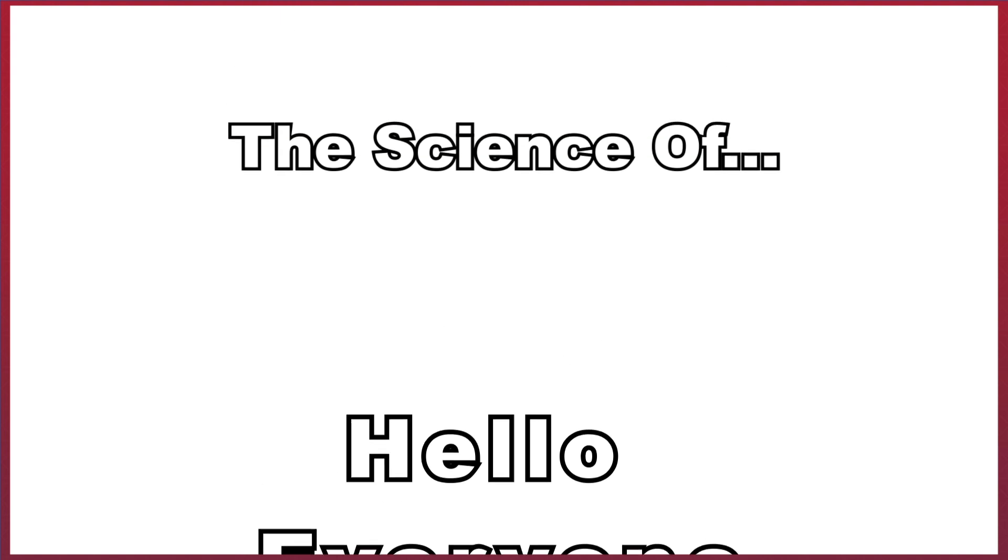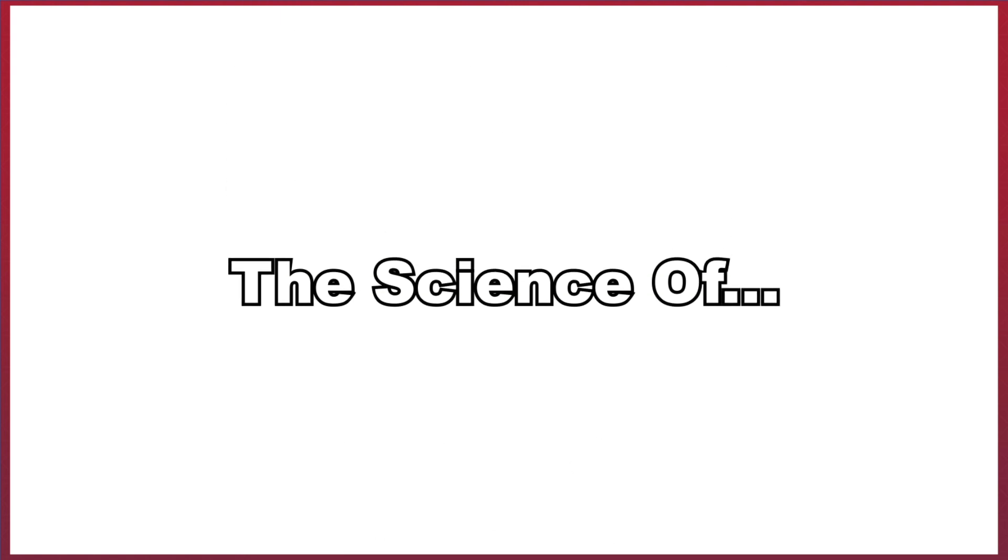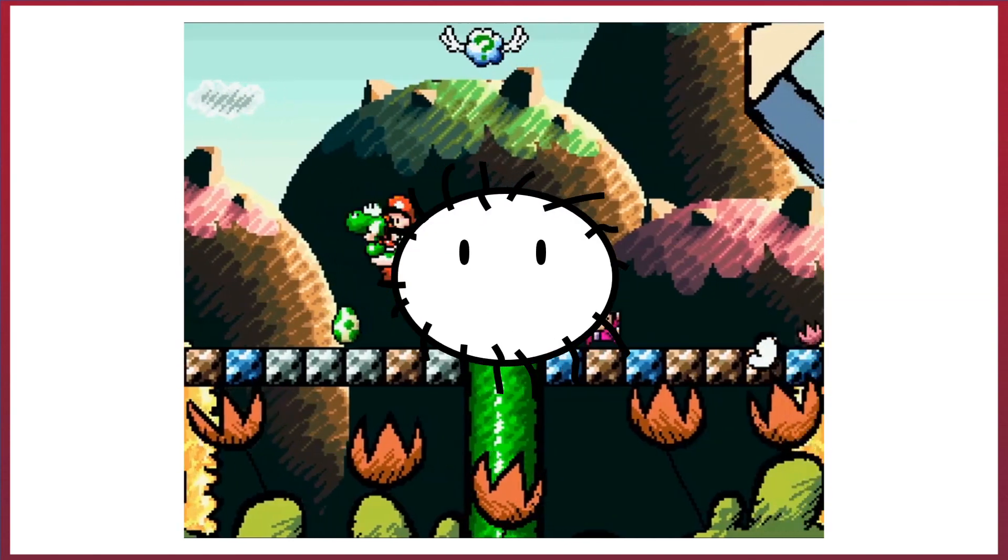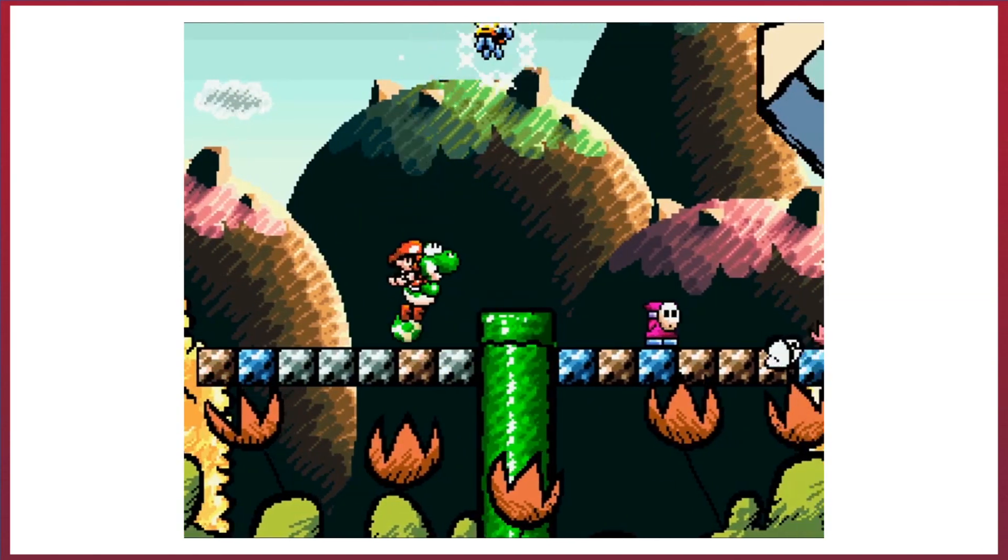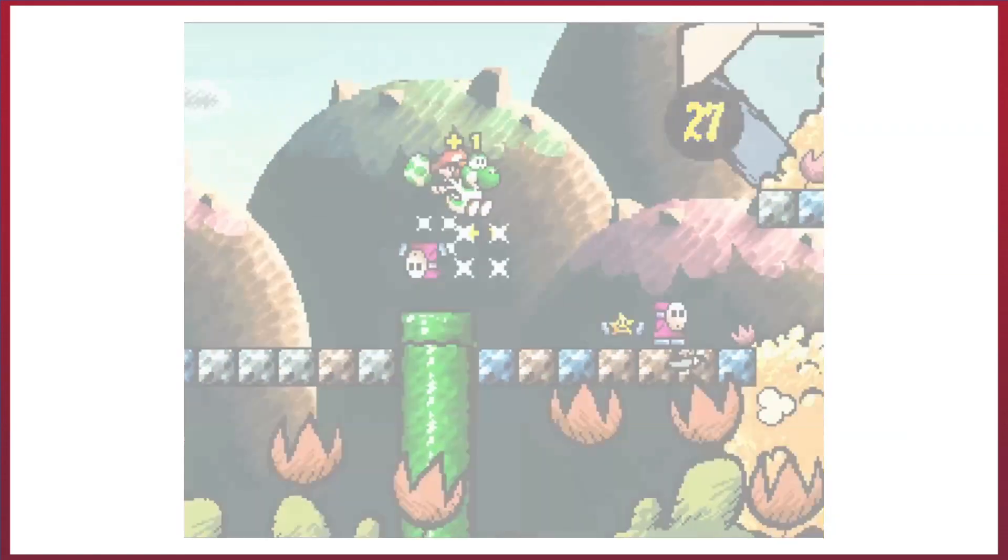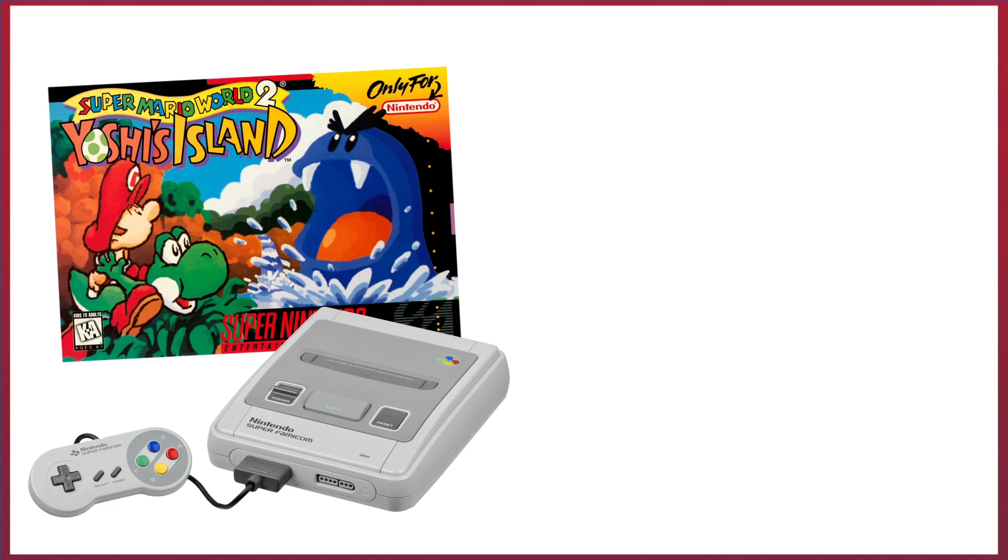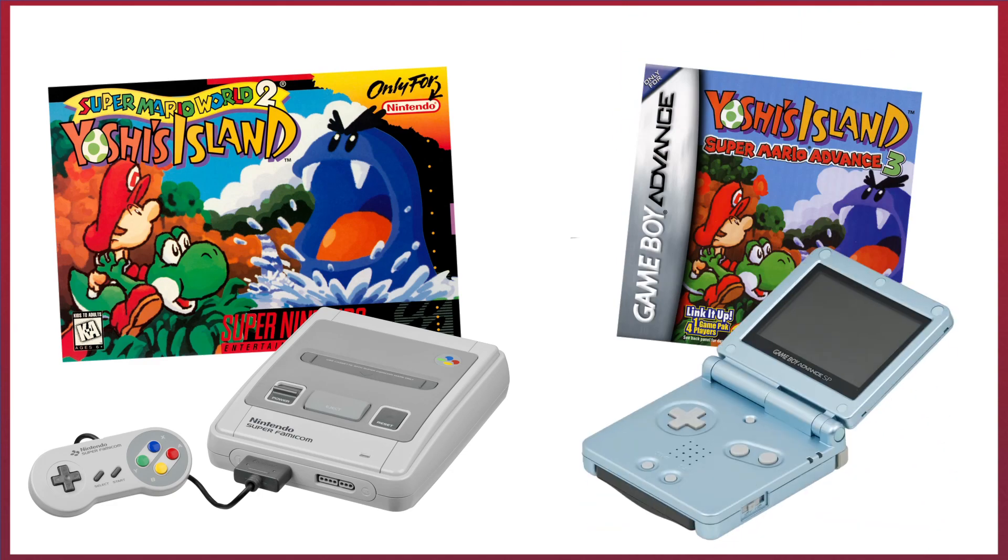Hello everyone, and welcome to The Science Hub, where today we will be taking a look at Yoshi's Island and one of its most notorious enemies, the Fuzzies. These frustrating enemies only appeared in one game in the whole Yoshi franchise, the very first Yoshi's Island title, Super Mario World 2: Yoshi's Island for the Super Nintendo, and then later in the 2002 remake for the Game Boy Advance.